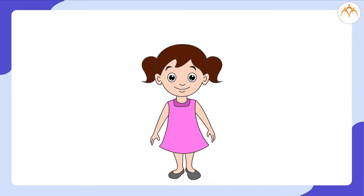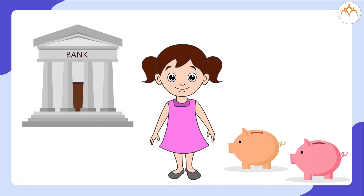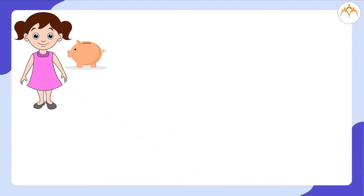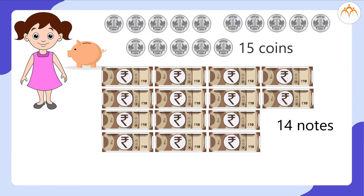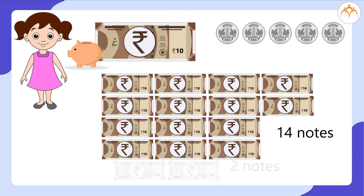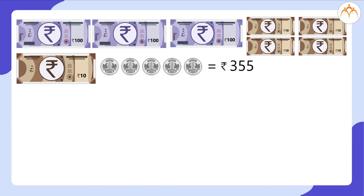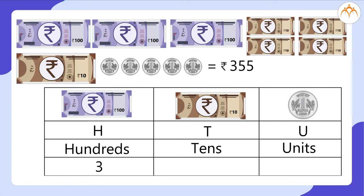Now I want you to help Meena. She wants to carry a minimum number of notes to the bank for depositing money from her 2 different piggy banks. From the first piggy bank, she removed 15 coins of 1 rupee, 14 notes of 10 rupees, and 2 notes of 100 rupees. After exchanging, it counts to rupees 355 — that means hundreds: 3, tens: 5, units: 5.